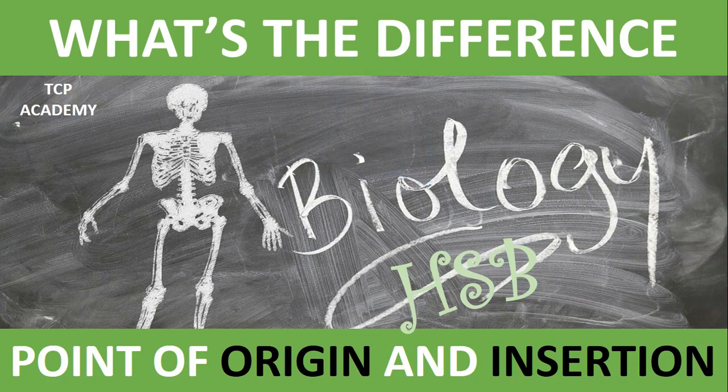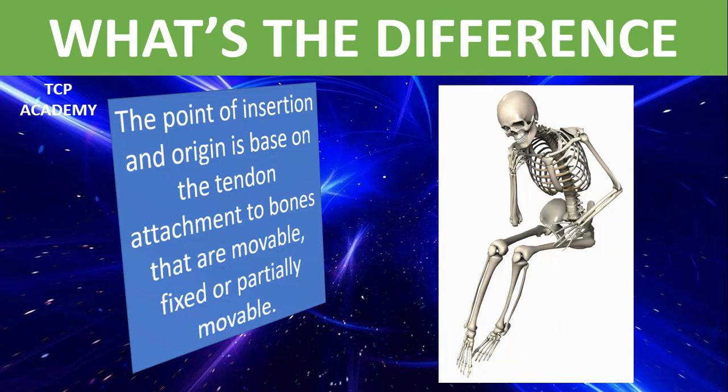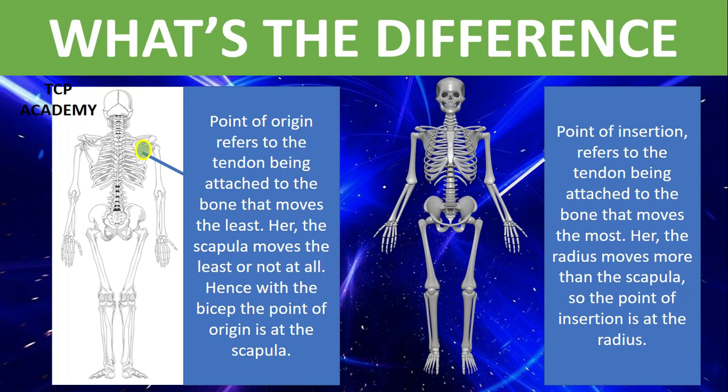The point of origin and insertion happens to be a troubled topic for many students. In this video, we'll assist you in understanding the difference between them both. The point of insertion and origin is based on the tendon attachment to bones that are movable or partially movable. Point of origin refers to the tendon being attached to the bone that moves the least.